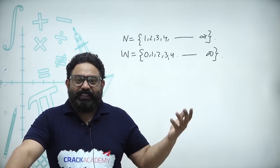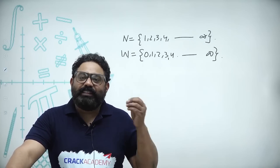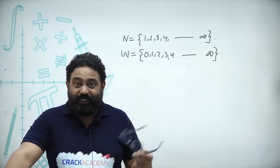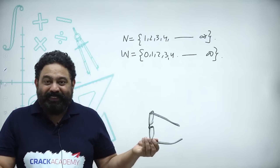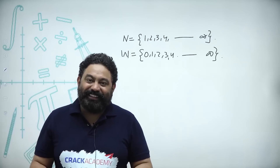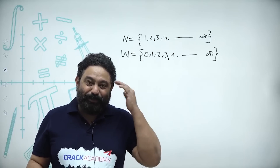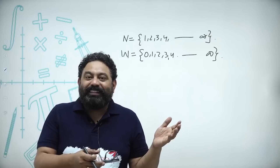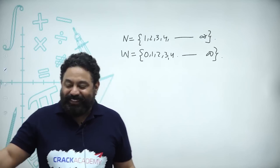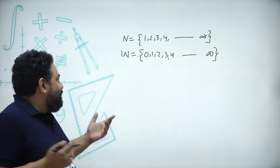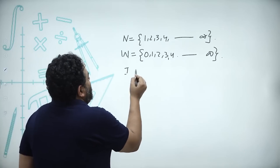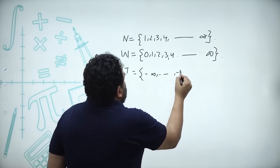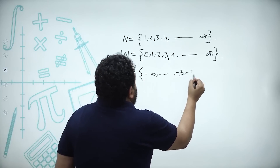Zero was invented by a great Indian scientist. My question to you is: can you name that scientist? Then comes integers — minus three, minus two, minus one, zero, one, two, three, four — till infinity.